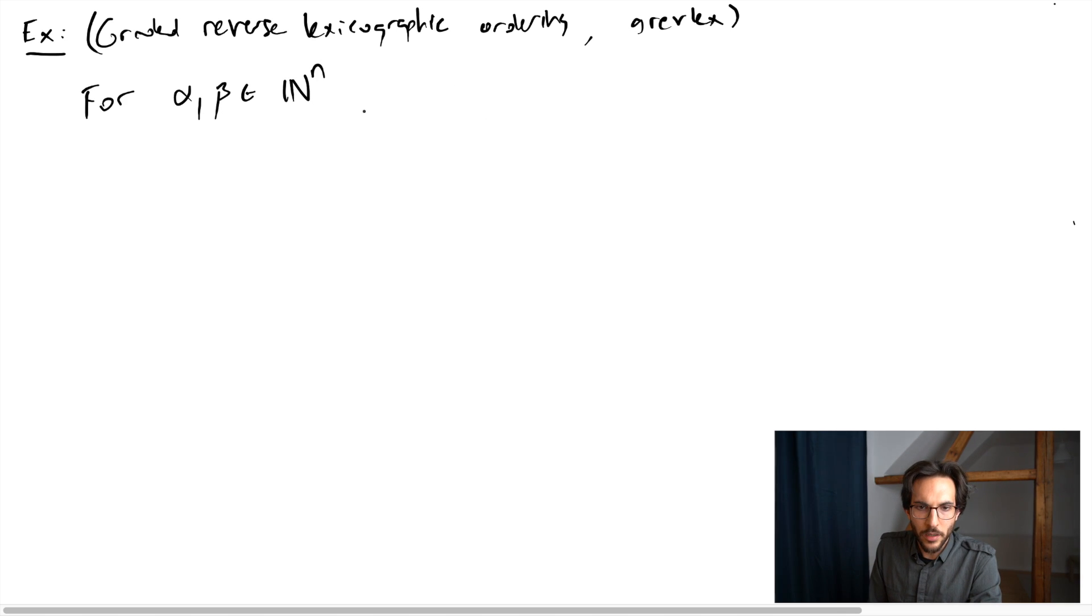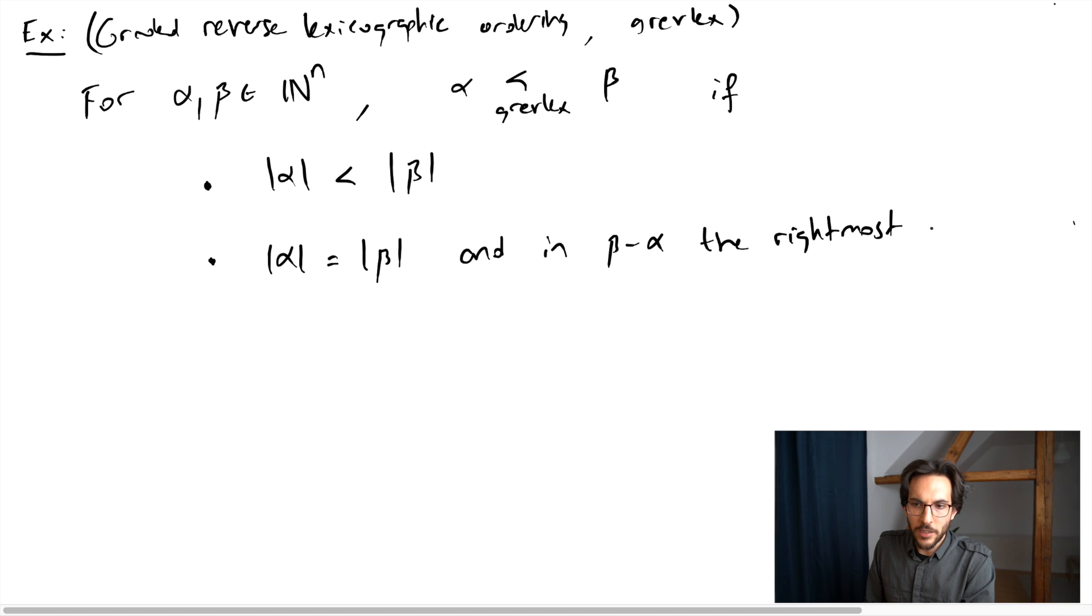So given two tuples, we say alpha is less than beta with respect to GREVLEX ordering if one of the two holds: either the sum of terms in alpha is less than sum of terms in beta, or sum of terms in alpha equals sum of terms in beta, and in beta minus alpha, the rightmost non-zero term is negative. So with lexicographic ordering, we were looking at the leftmost non-zero term and we wanted it to be positive. Right now we are looking at the rightmost term and we want it to be negative.